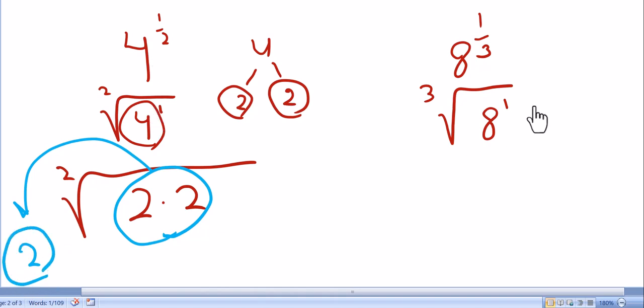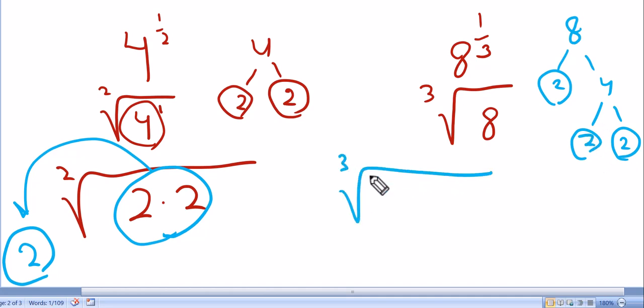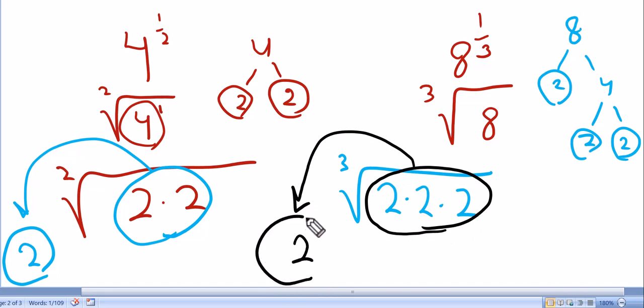Now what about a cube root of 8? Well, same idea. If we were to go ahead and do a factor tree for 8, that's 2 times 4. That's prime. 2 times 2, and those are prime. So I could rewrite this as 2 times 2 times 2. Now, when I'm looking for, with a square root, we're looking for pairs. For a cube root, we're looking for groups of 3. Here's one group of 3. I pull that out and the answer is going to be 2.